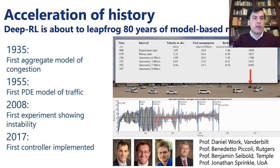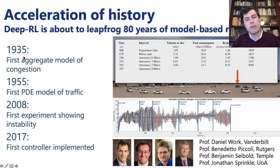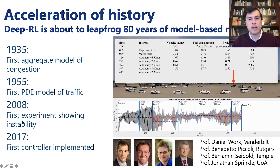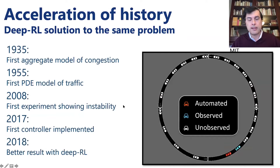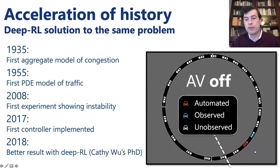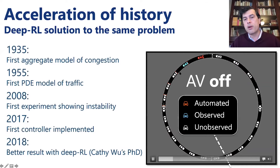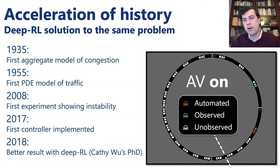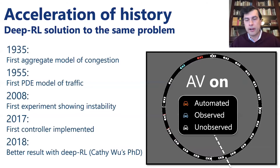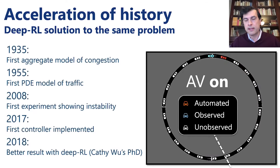Now I'll show the same thing in simulation, done one year later by Kathy Wu, now a professor at MIT. She reproduced the same experiment in SUMO, but the red car is automated, the blue car is the only thing it can see, and when the red car crosses the marked line it turns on the autopilot. As you can see, it reproduces the same result you just saw in the movie. You might wonder why I'm showing a simulation from 2018 when the experiment was done in 2017 — but there's a good reason.